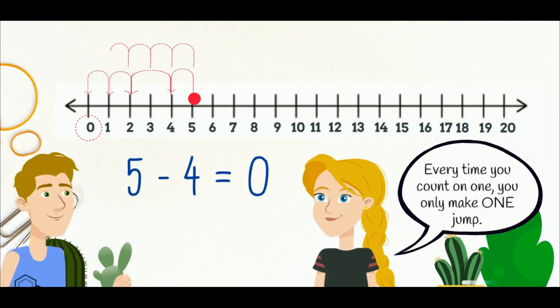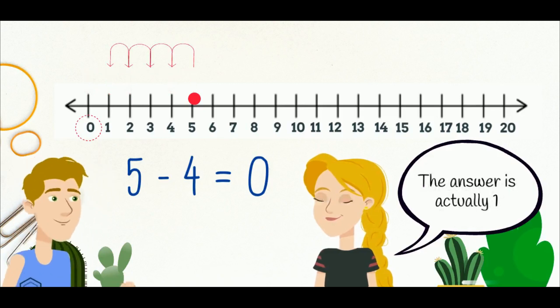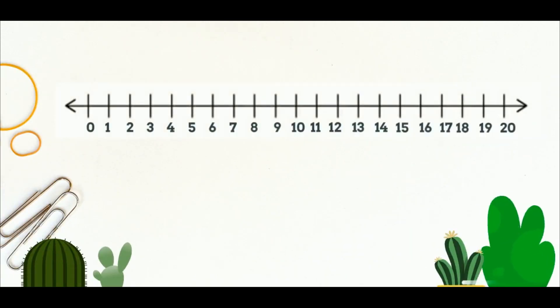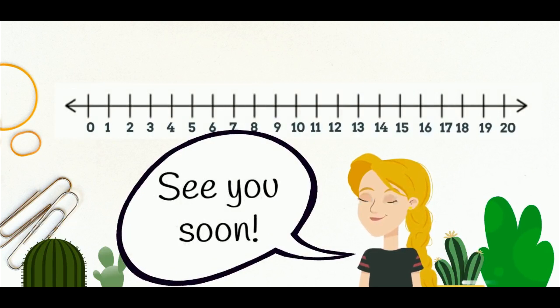So five take away four really equals one. Well done! Now it's your turn. Can you have a go at solving subtraction using a number line? See you soon.